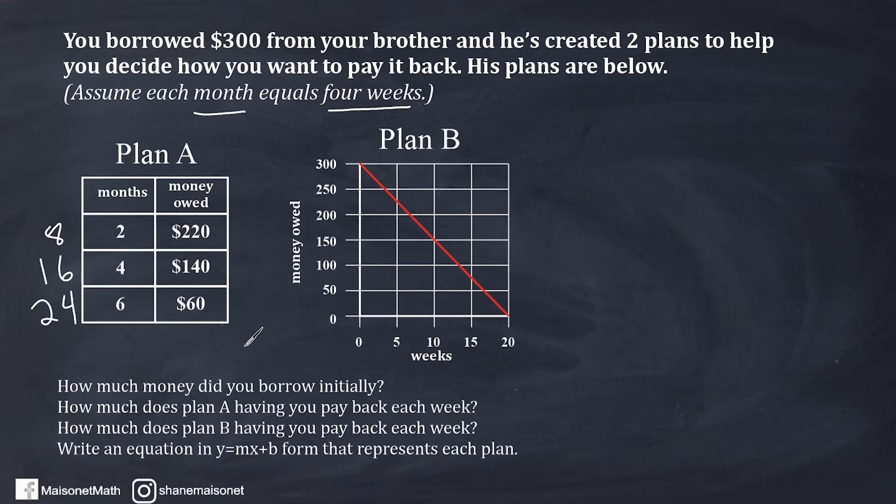So the first thing that we have to answer is how much money did you borrow initially? So that means without any time going by, at the start of time when you borrowed that money, you owe a certain amount. The word initially means at the beginning. Now notice for Plan A, it doesn't show what the initial amount is, but it does for Plan B at zero weeks where this red line starts right here, you owe $300.